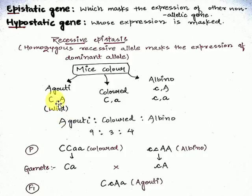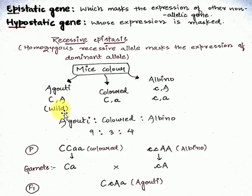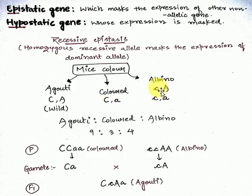There are two genes responsible for coat color — C and A. When both C and A are dominant, whether homozygous or heterozygous dominant, a dominant gene always expresses itself. So when both C and A are dominant, it forms agouti color. When only C is dominant, it forms colored mice — an easy trick: 'colored' starts with capital C. When only A is dominant or both are recessive, it forms albino.